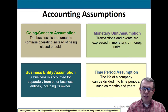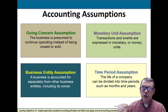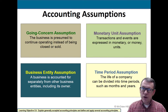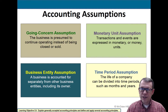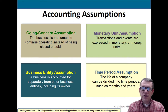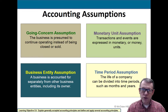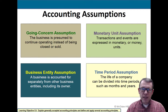Accounting assumptions: the going concern assumption says we assume that the company we're doing accounting records for is going to continue on indefinitely. If the end is near or in sight, we need to disclose that — that's in green. The monetary unit assumption, in purple letters, gets back to our costing principle: transactions and events are expressed in monetary or money units. We don't do accounting in eggs or pounds of bacon — we do it in actual monetary units, whether that's dollars, pounds, pesos, or yuan.